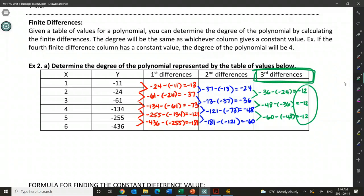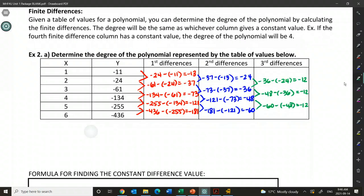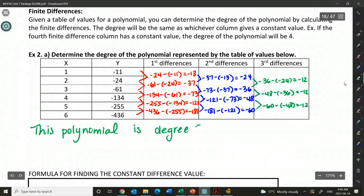It just matters that that's happening in the column for the third finite differences. So this polynomial must be degree 3, or in other words, a cubic polynomial, cubic function, because the third finite differences are constant.